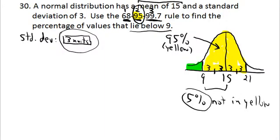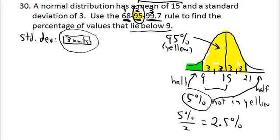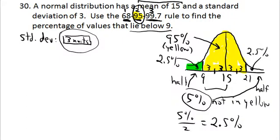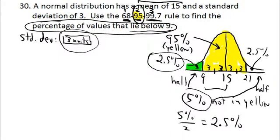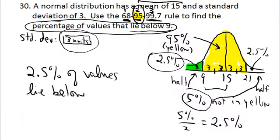If 95% of the area is in yellow, then 5% is not in yellow. Half of that goes on the left and half goes on the right — split symmetrically. Half of 5% is 2.5%, so 2.5% of the area lies below 9 and 2.5% lies above 21.